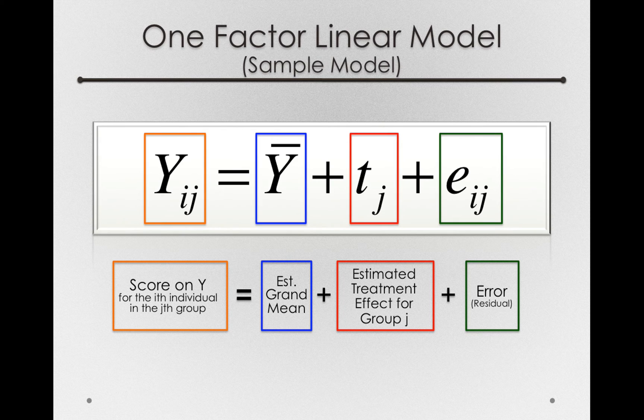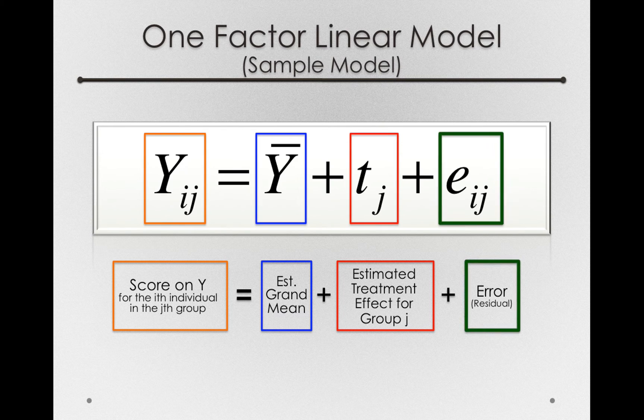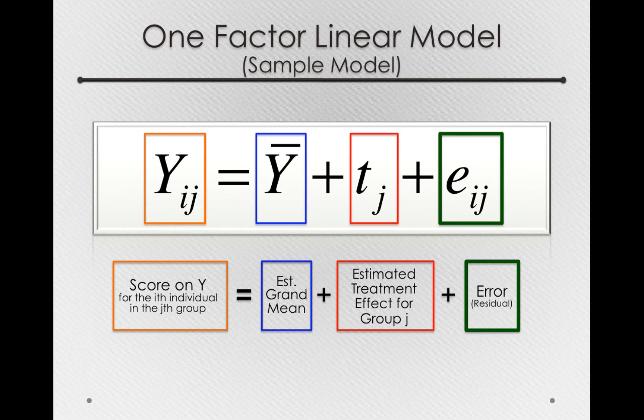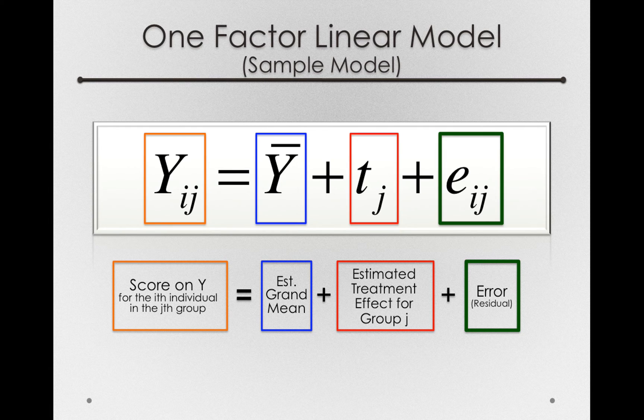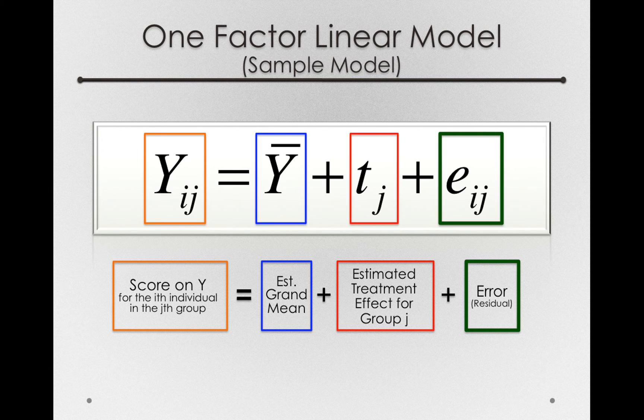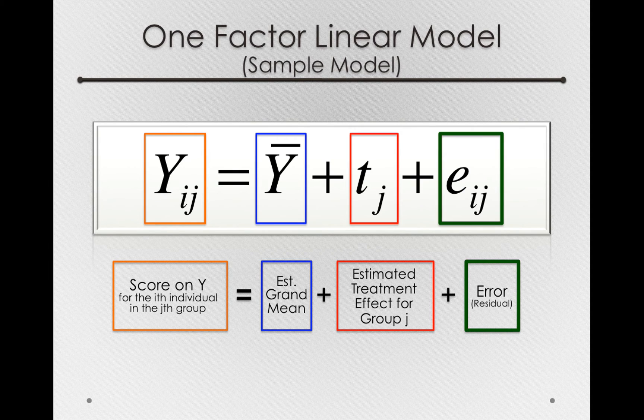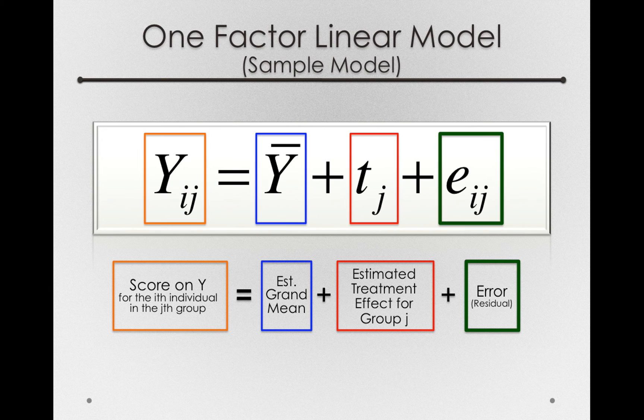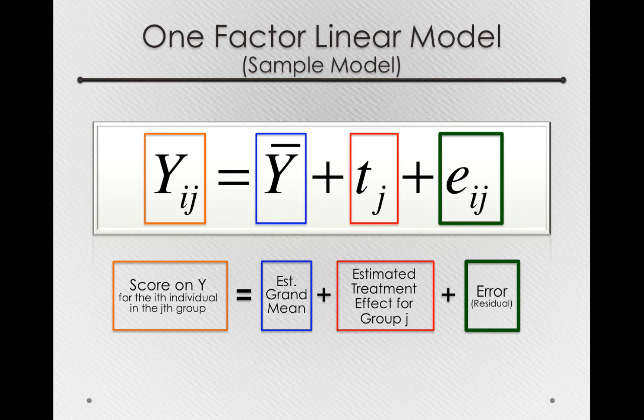And the way we're going to do this is by looking at those residuals, the e sub ij's. Now let's remember what these represent before I go on and show you any more formulas. The e sub ij's in our sample model is just the difference between the score on Y for any individual, for instance, Tom, who paid something like $360, and the group mean that Tom is a member of. So the e sub ij is simply the difference between an individual's score and the mean of the group that they're a member of.